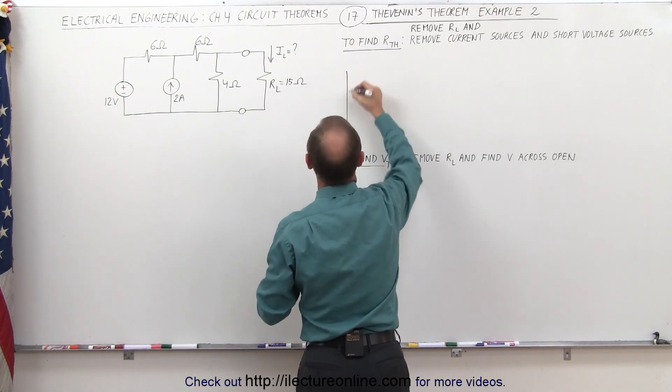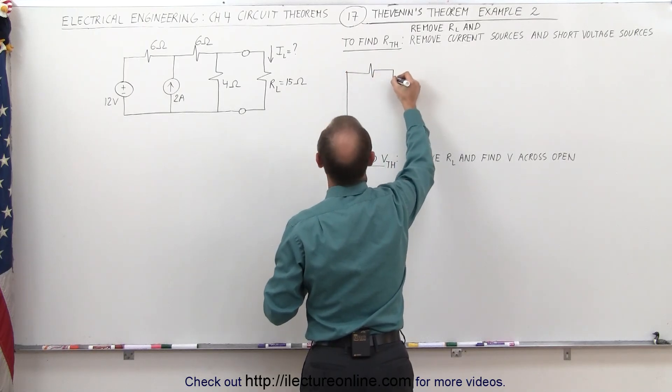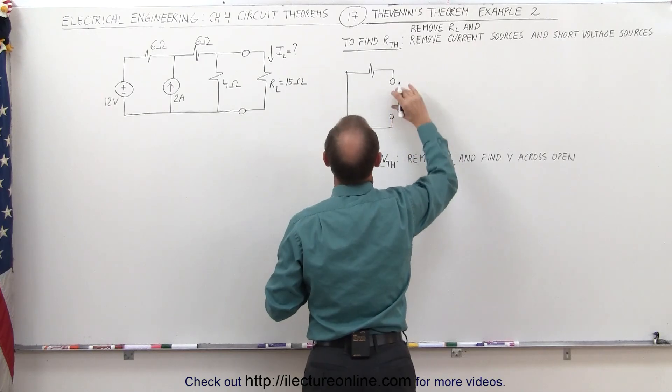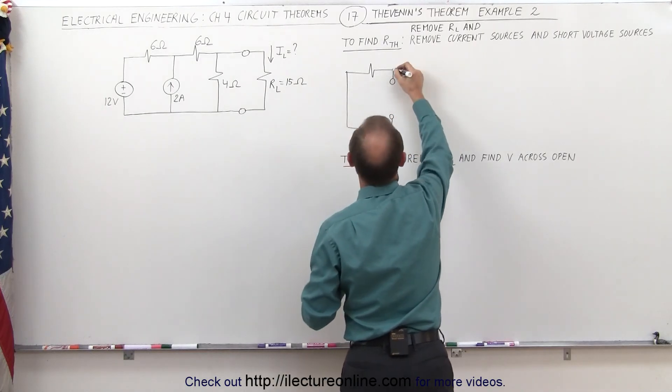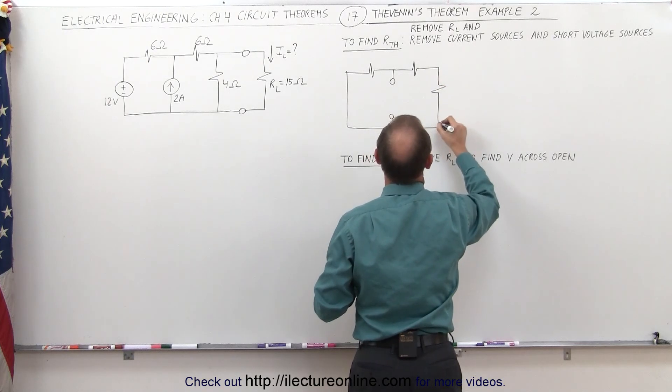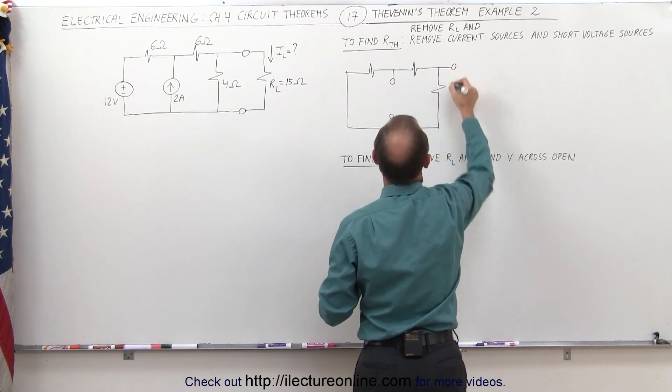This becomes a short. We still have our 6 ohm resistor. The current source has been removed, so we have an open right there. We have another 6 ohm resistor. We have a 4 ohm resistor, and the load resistor has been removed as well.